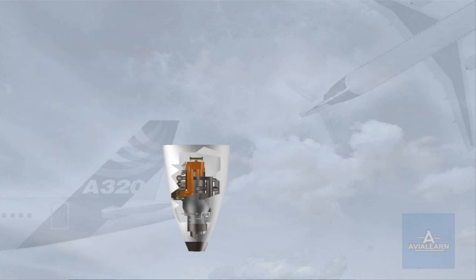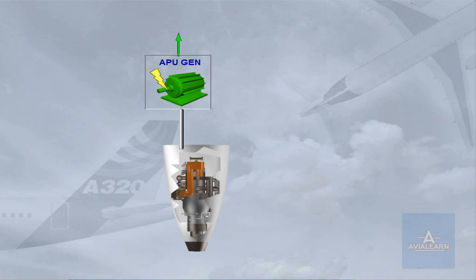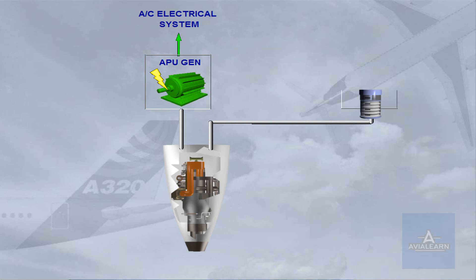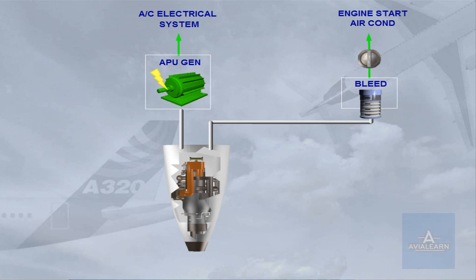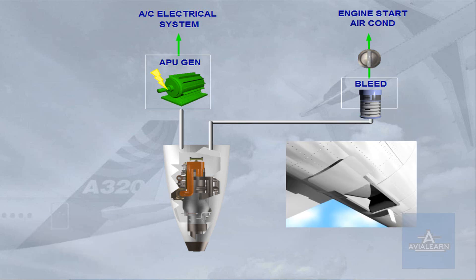The APU provides electrical power for the aircraft electrical system and bleed air for engine start and air conditioning. The APU has an air intake flap which, when it is open, ducts external air to its compressor inlet.